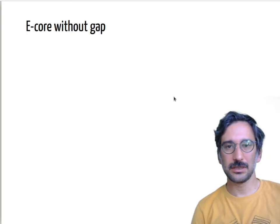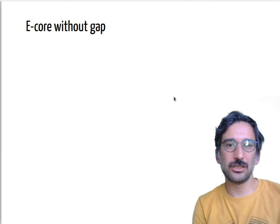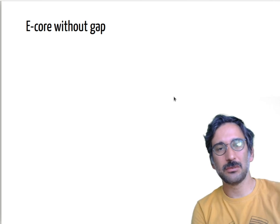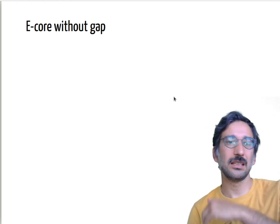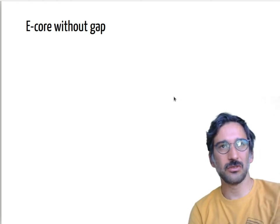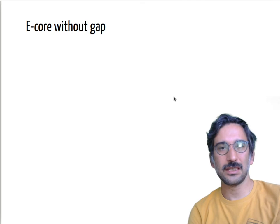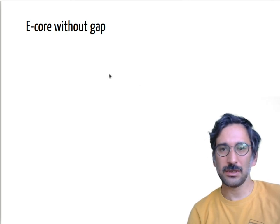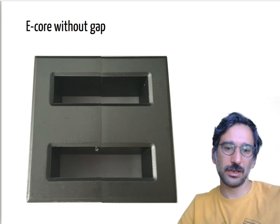For a perfect transformer, you don't have to store energy inside the core because you are transmitting energy immediately. But for a flyback converter, we store energy in the magnetizing inductance and then transfer it to the secondary side. So for that kind of topology, the core is not just a transformer but also an energy storage element.